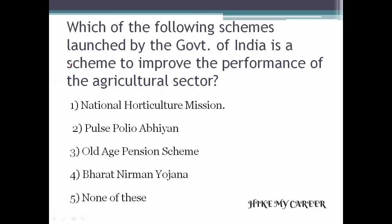Next question: which of the following schemes launched by the Government of India is a scheme to improve the performance of the agricultural sector? Option 1: National Horticulture Mission. Option 2: Pulse Polyarbyon. Option 3: Old Age Pension Scheme. Option 4: Bharat Nirman Yojana. Option 5: None of these. Answer is Option 1: National Horticulture Mission.